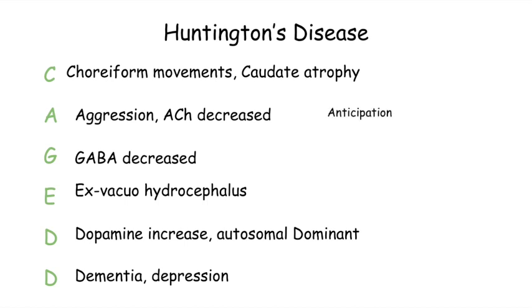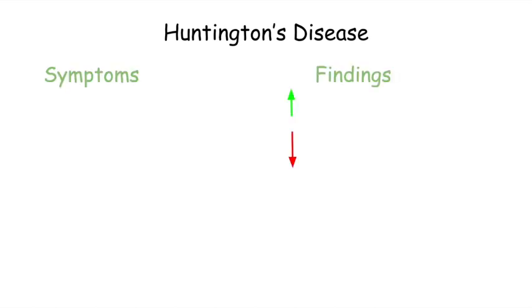A very high yield concept to know is anticipation. Anticipation refers to an increase in severity and a decrease in age of onset in successive generations. For example, if a father is diagnosed with Huntington's disease at age 65, his children will get Huntington's disease at an earlier age and their symptoms will be more severe.